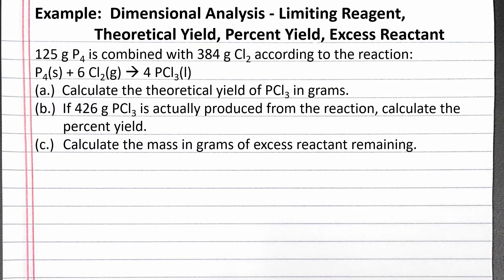Part A: calculate the theoretical yield of PCl3 in grams. Part B: if 426 grams PCl3 is actually produced from the reaction, calculate the percent yield. And Part C: calculate the mass in grams of excess reactant remaining.